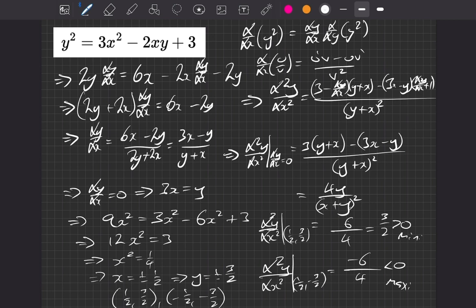So we found our stationary points, and we labelled each of them as well, knowing that the one with the positive values was going to be a minimum, the one with the negative values was going to be a maximum. That's all done. Thanks very much.